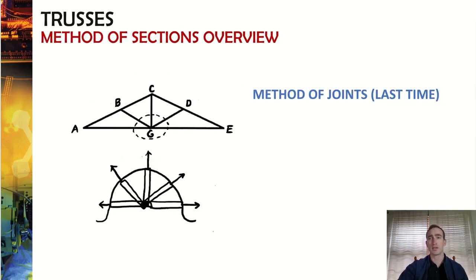Last time we discussed what was called method of joints. With method of joints, you looked at every single joint in the truss. In this particular example we would have looked at joints A, B, C, D, E, and G. For each of those joints, we looked at the forces of those members at that joint — each member would have been drawn as a force. Method of joints is really like making a cut around one single joint, in this case joint G.